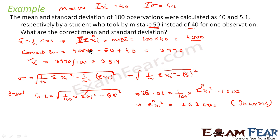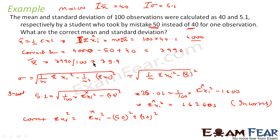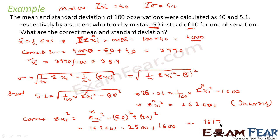Similarly, correct Σxi² = incorrect Σxi² − 50² + 40². This is 162601 − 2500 + 1600 = 161701. So the correct sum of squares is 161701.